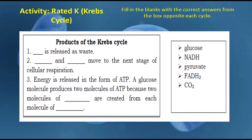The products of the Krebs cycle: number one, carbon dioxide is released as waste. Number two, NADH and FADH2 move to the next stage of cellular respiration. Number three, energy is released in the form of ATP. A glucose molecule produces two molecules of ATP because two molecules of pyruvate are created from each molecule of glucose.